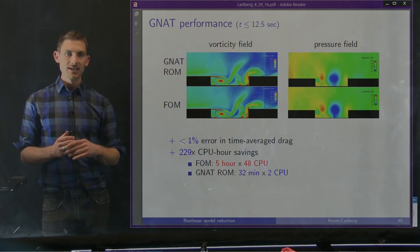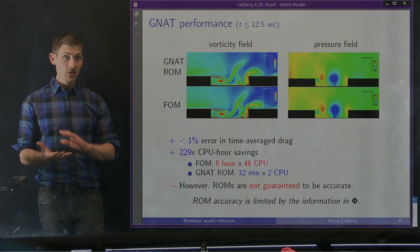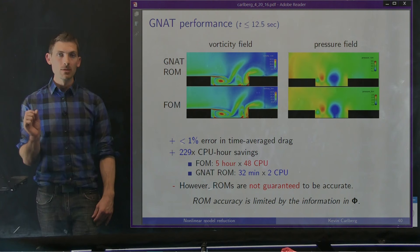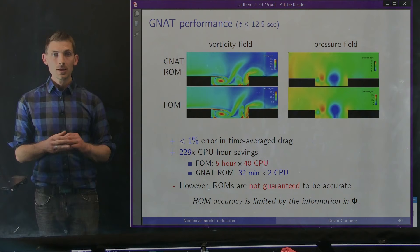I just showed some results with the NAT reduced order model — less than 1% error and 230 times CPU hour savings, which is a nice result. However, as we know, ROMs are not guaranteed to be accurate in all cases. ROM accuracy is limited by the information in phi. I've assumed that my state lives in the low dimensional subspace spanned by the columns of phi, so if that assumption fails, our reduced order model will not be accurate.